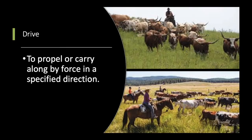Our next word is drive — to propel or carry along by force in a specified direction. In terms of this unit, we're talking about a cattle drive. A cattle drive is used to take cattle from one location to another, usually to meet a railroad pickup location so that you can get your cattle across the United States.